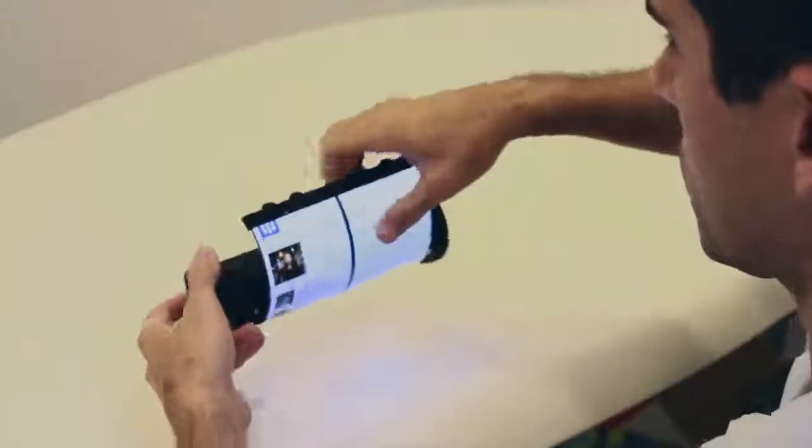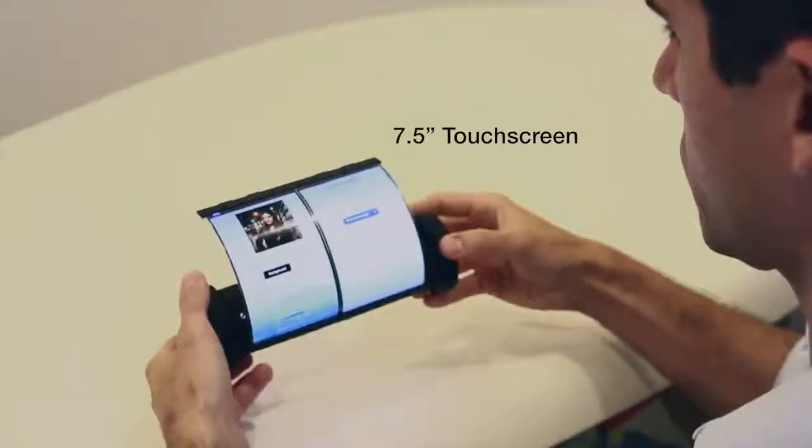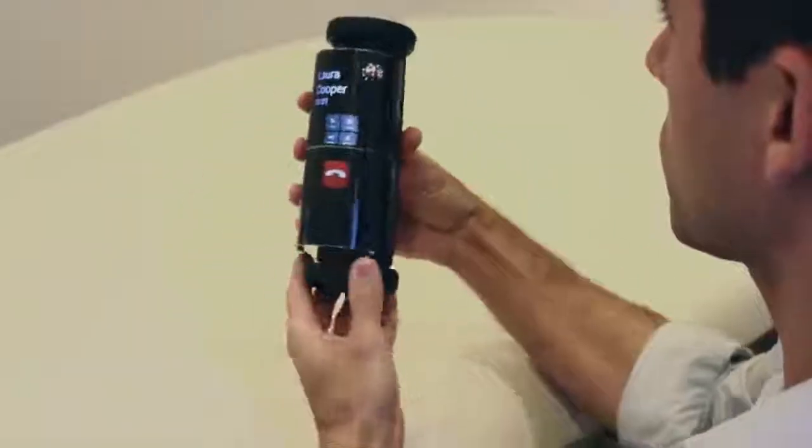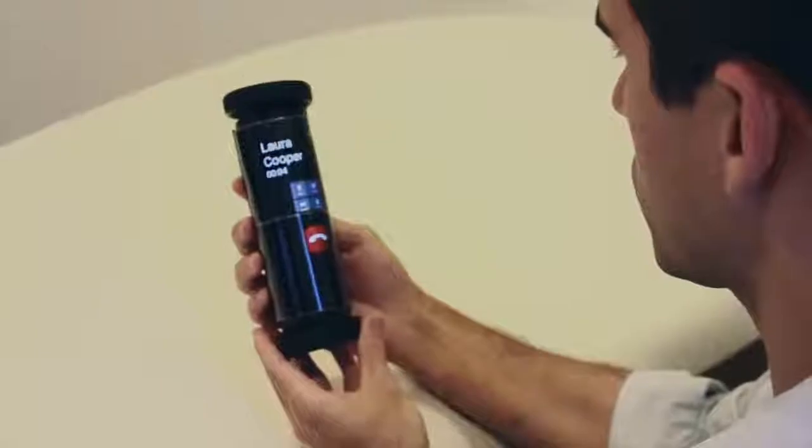When the user has found a contact, he can extend the display to open the linked page. The user makes a phone call by touching the screen and rolling up the display to pick up the phone. As a phone, the cylindrical form factor allows for a better ergonomic fit for single-handed use.